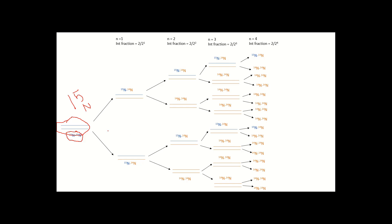In generation 1, there are two ¹⁵N/¹⁴N intermediate-density duplexes out of a total of two DNA molecules. So the fraction of intermediate density DNA is 2 divided by 2¹, which equals 1.